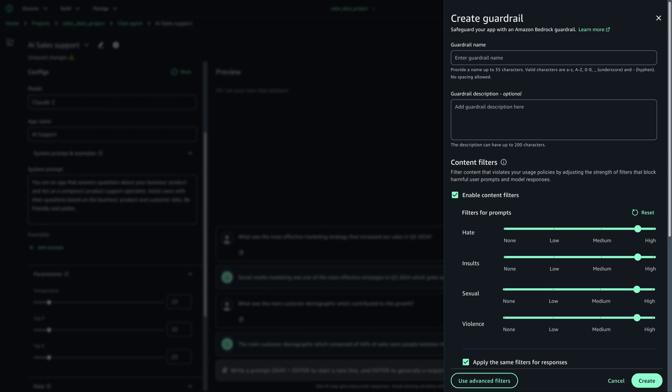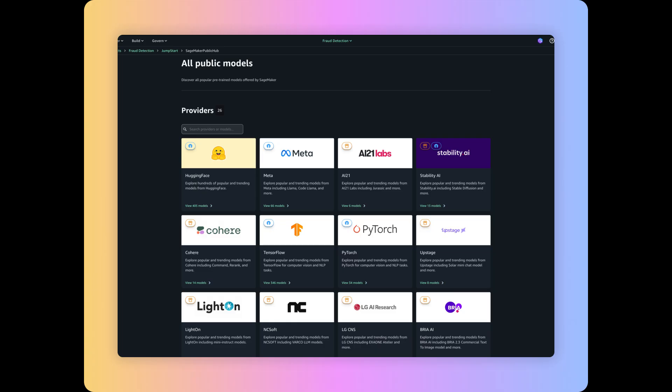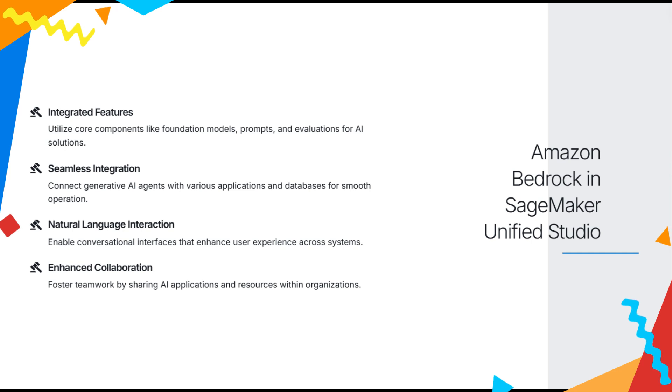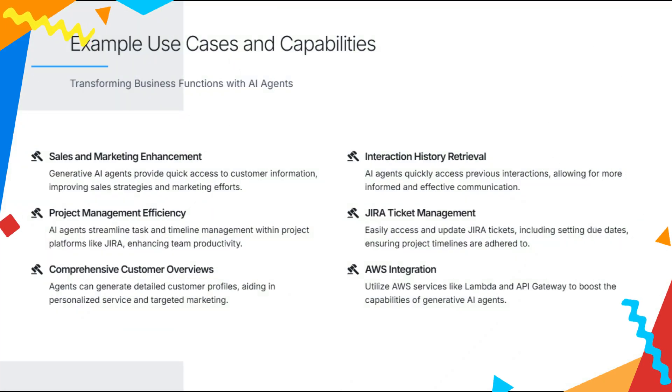By using Amazon Bedrock in SageMaker Unified Studio, organizations can accelerate the creation and deployment of scalable AI applications that drive innovation while maintaining control over performance, compliance, and security. This seamless integration empowers users to build, customize, and scale generative AI solutions more effectively, boosting productivity and enabling faster decision-making. Ultimately, Amazon Bedrock enhances the ability to create AI solutions that are both cutting-edge and ethically grounded.